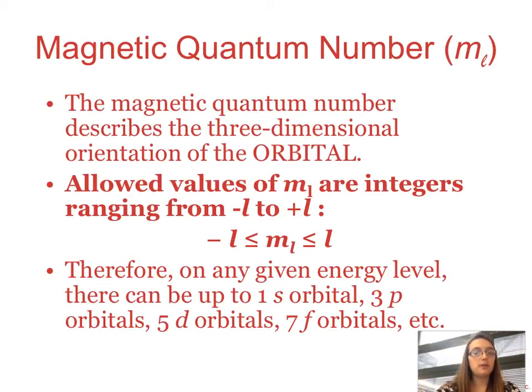So the third quantum number that we look at is m sub l. This is the magnetic quantum number. So this actually describes the orbital itself. So it's the three dimensional orientation of the orbital. So these allowed values are any integers ranging from negative l to positive l. So anything from negative l to positive l are our values for m sub l. So therefore, on any energy level, we can have 1 s orbital, 3 p orbitals, 5 d, 7 f, and so on.